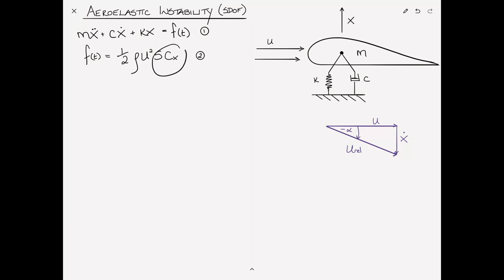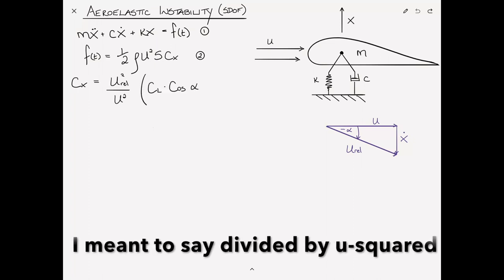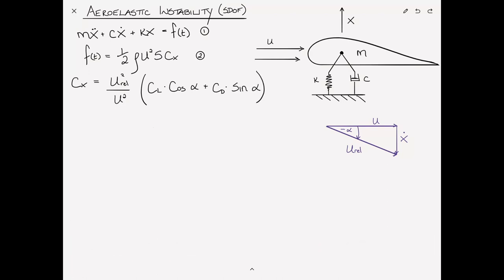Now, the only thing that requires a little further investigation is this term Cx, which is the coefficient of force in the x direction. It could be thought of like a coefficient of lift for various reasons. The expression for Cx can be written as u_relative² divided by u² times CL cosine α plus CD sine α. CL is actually the lift coefficient relative. This would be CL here and CD would be in this direction here. We want to resolve it into an x direction. The way we do that is we take the cosine of CL and we add it to the sine of CD. Call that equation 3.